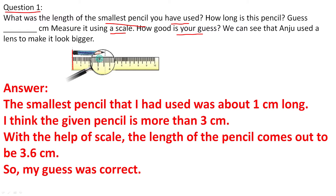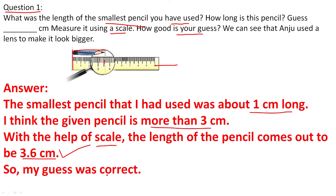You can count the number of lines between 3 and 4: 1, 2, 3, 4, 5 — so the sixth mark gives 3.6 centimetres. The smallest pencil I had used was about 1 centimetre long. I guessed the given pencil is more than 3 centimetres. When I measured it with a scale, the length came out to exactly 3.6 centimetres. So my guess was correct.